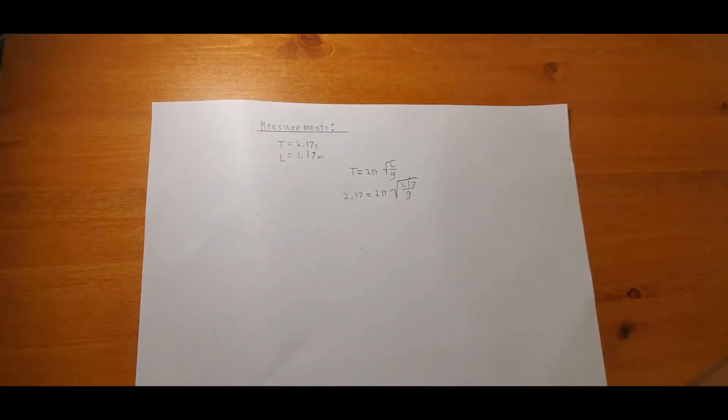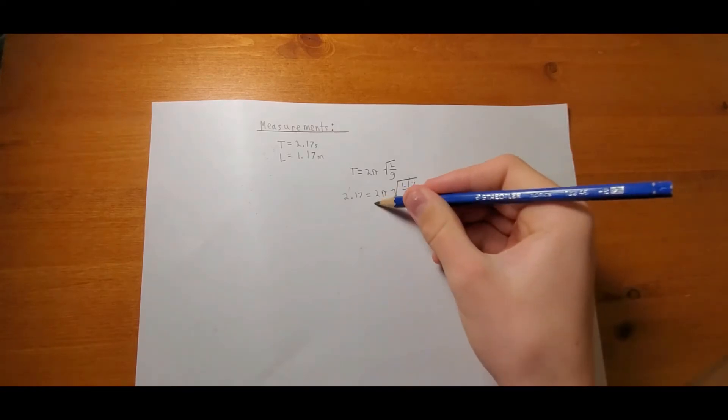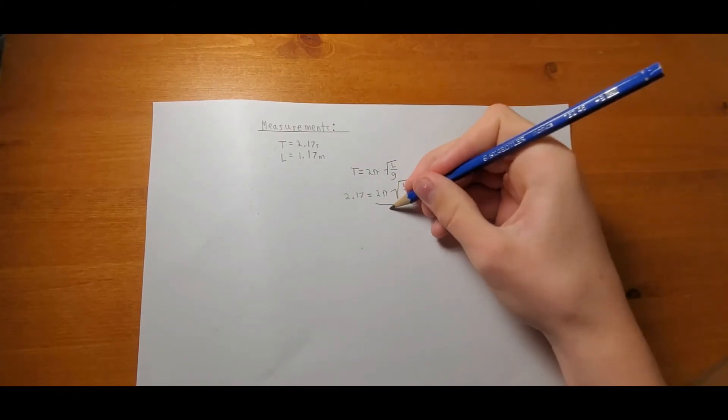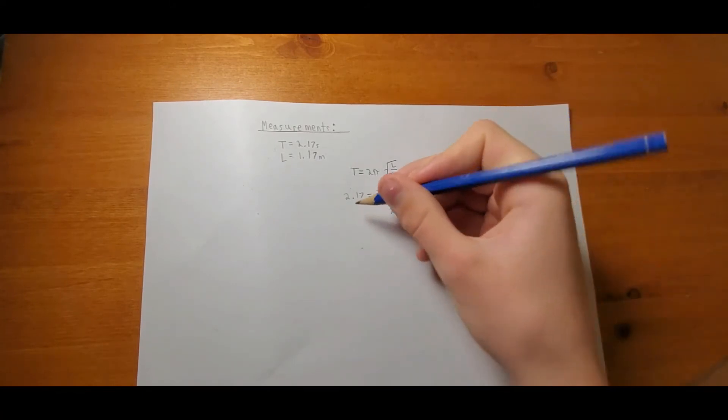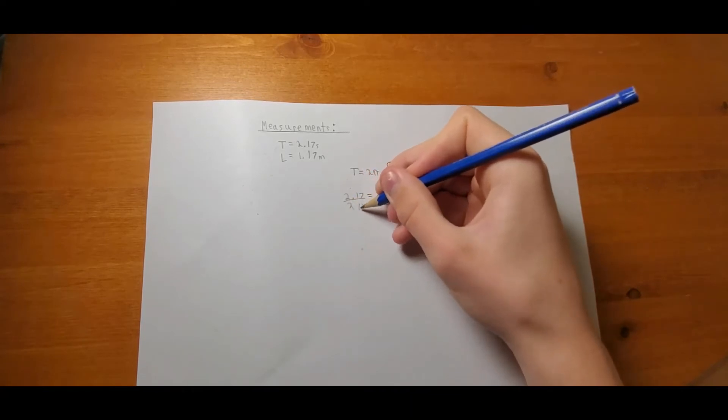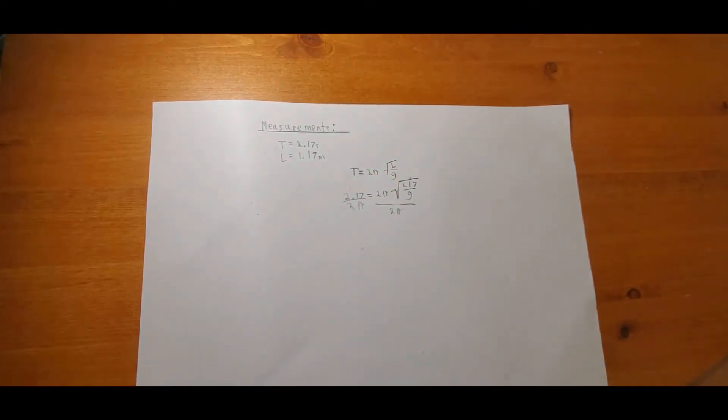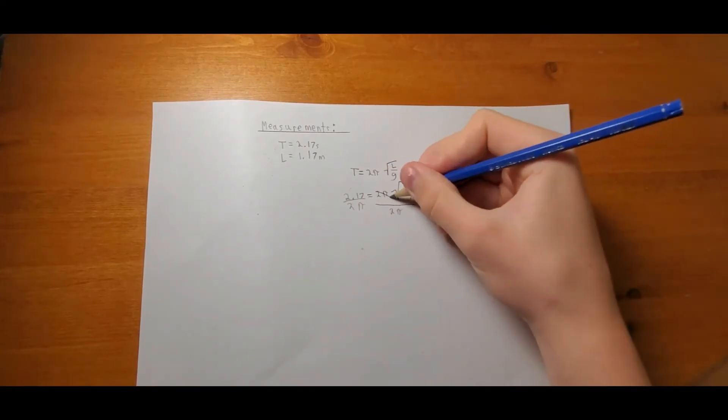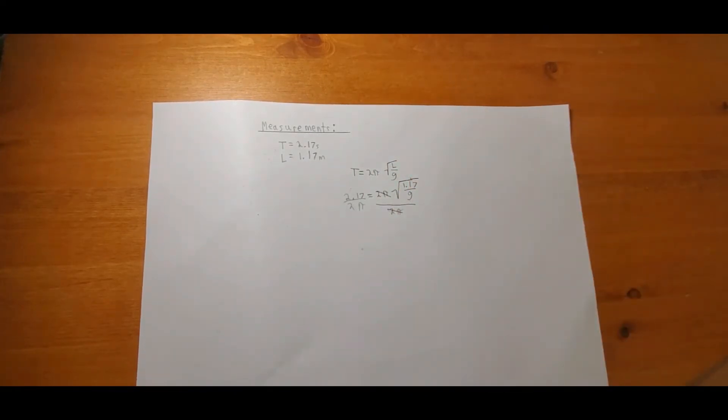Now, in order to solve this, we need to do some algebra. So first things first, we'll divide both sides by 2 pi. And you'll look here. These two cancel each other out. No more.